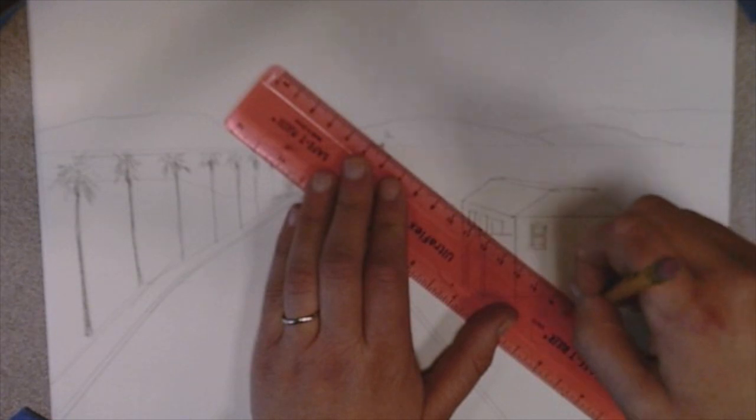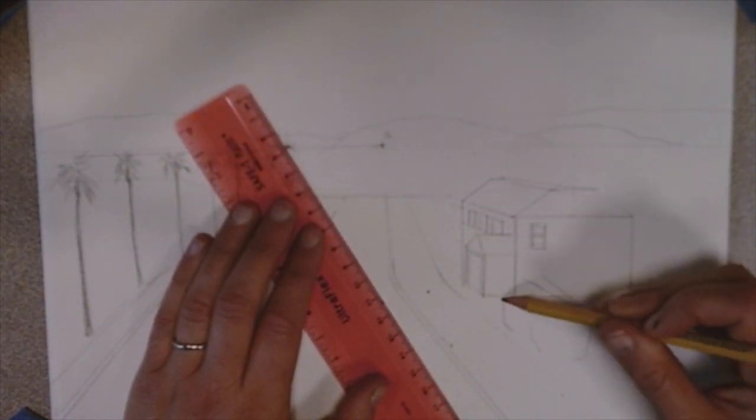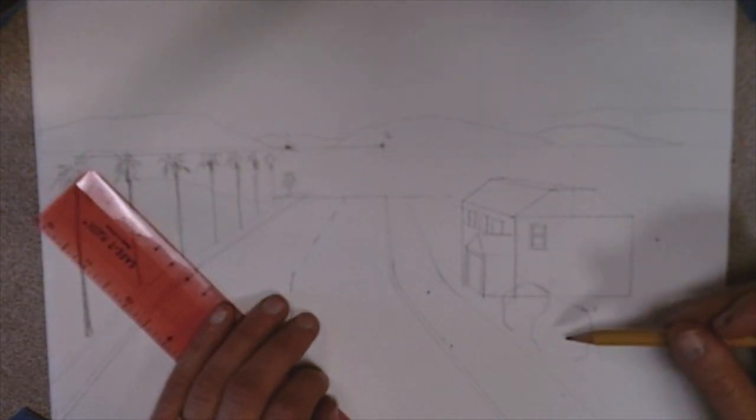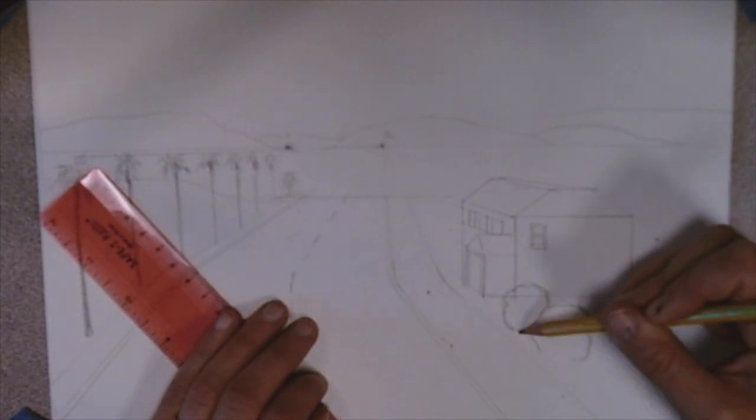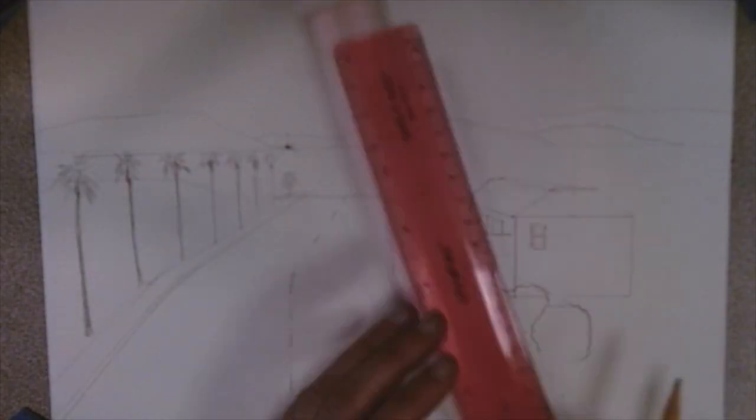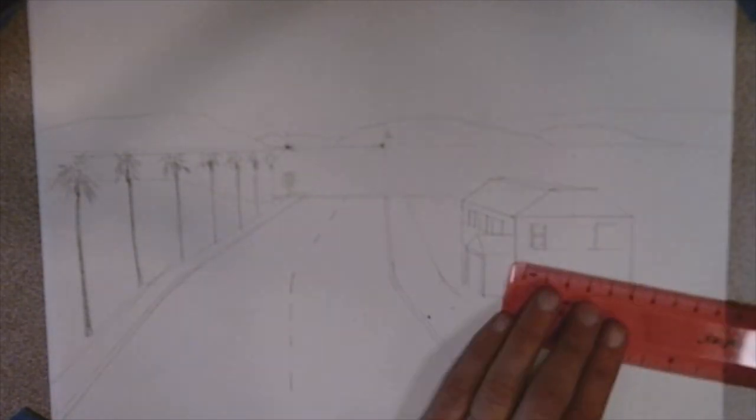So I'm just drawing in some details on the windows. I'm going to put some bushes up front. And I'm going ahead and drawing a line to that first vanishing point to get the height of the bushes so that I know that the bushes are getting smaller as they go back. And bushes are fun and any type of trees is going to be fun because they're irregular. So it doesn't have to be perfect.